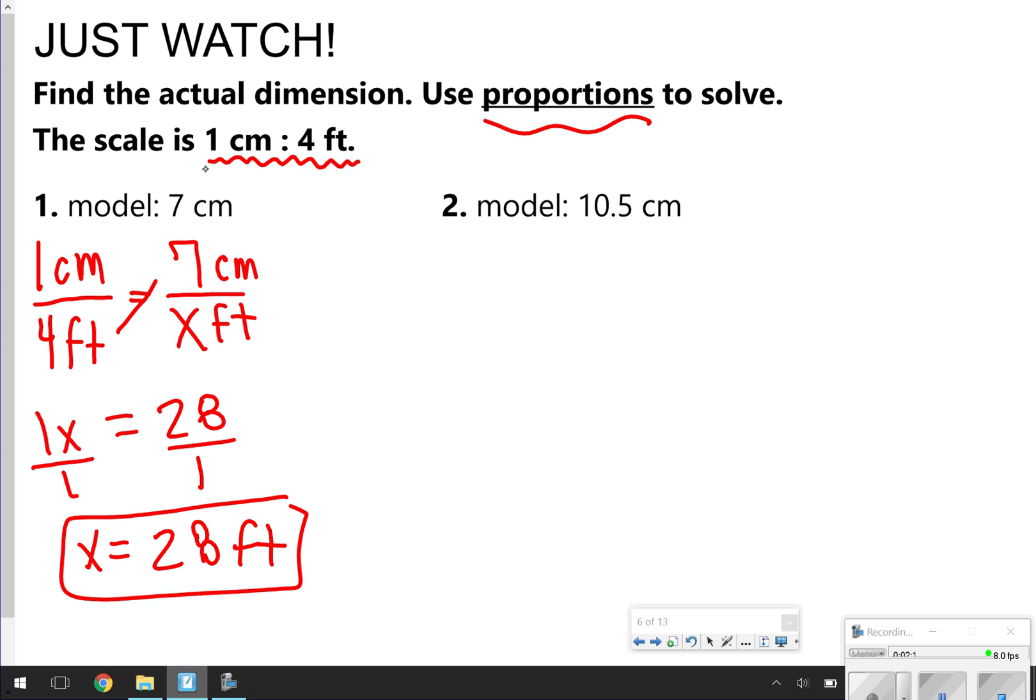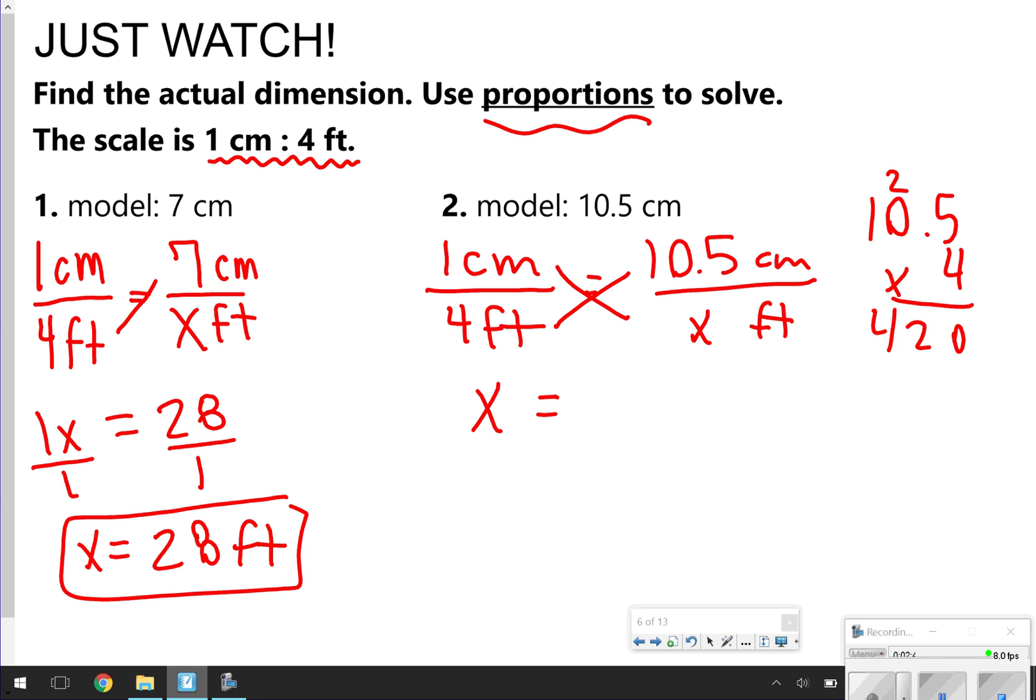Same thing in number 2. You're still using the same scale. 1 centimeter over 4 feet is 10.5 centimeters over x feet, which we don't know yet. I'm going to cross multiply again. This time, I'm just going to say 1 times x is x, because that's essentially what it means. I do have to come over here and show my work for 10.5 times 4. So that's 20, carry my 2, 4 times 0, and 4 times 1. And then moving my decimal 1 time, I get 42. So x is equal to 42 feet.